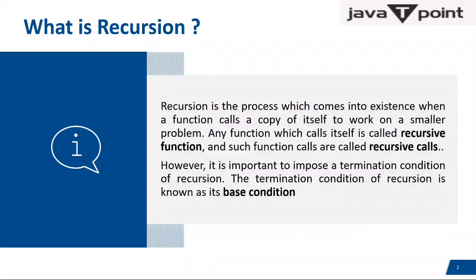Suppose you are John and John is calling John, and again John is calling John. So if John is a function calling itself again and again, it is creating a copy of itself. Any function which calls itself is called a recursive function, and such calls are called recursive calls. However, it is important to impose a termination condition — that is known as the base condition.